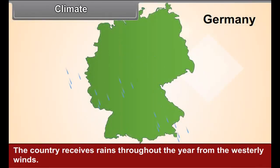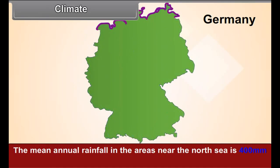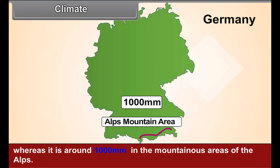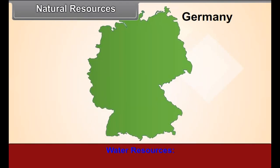This country lies in temperate latitudes. The northern and north-western parts enjoy a coastal location, so summers are mild and winters are warm. In the eastern and southern parts, winters are severe. The country receives rain throughout the year from westerly winds. Rainfall decreases from west to east — the mean annual rainfall near the North Sea is 400 mm, whereas it is around 1,000 mm in the mountainous Alps areas, which also experience snowfall.